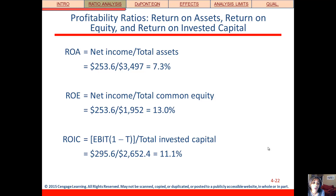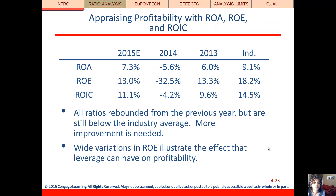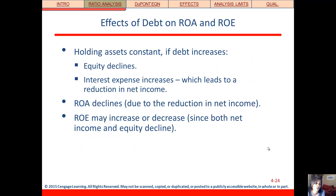Continuing with profitability, these are big ones for investors: ROA, ROE, and ROIC — return on assets, equity, and invested capital. We want these to be as high as possible. Our numbers are 7, 13, and 11 respectively. ROA is trending up but still below the industry. ROE is certainly making a comeback but still below the industry, and the same for ROIC. They still have some work to do when it comes to these important investor measures. Overall, profitability is rebounding but it's still below industry average.